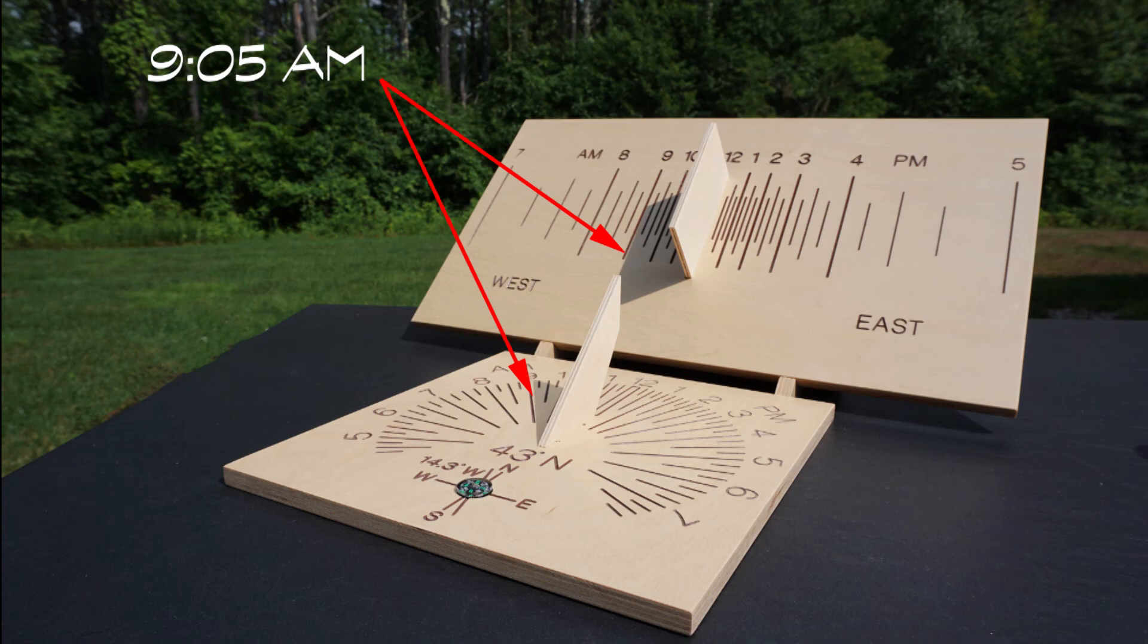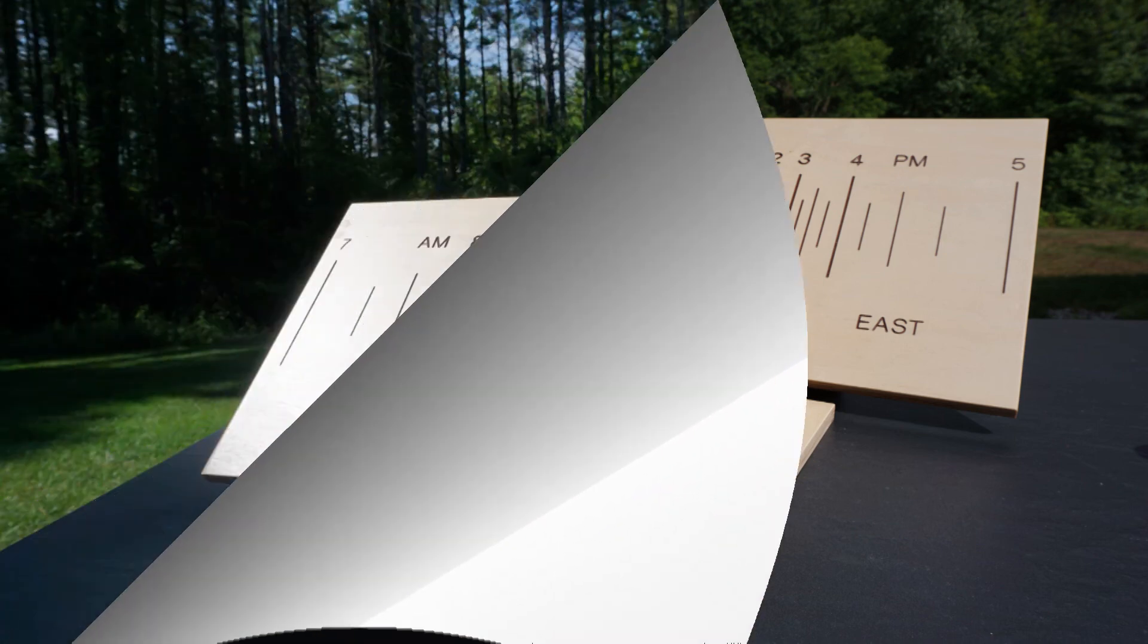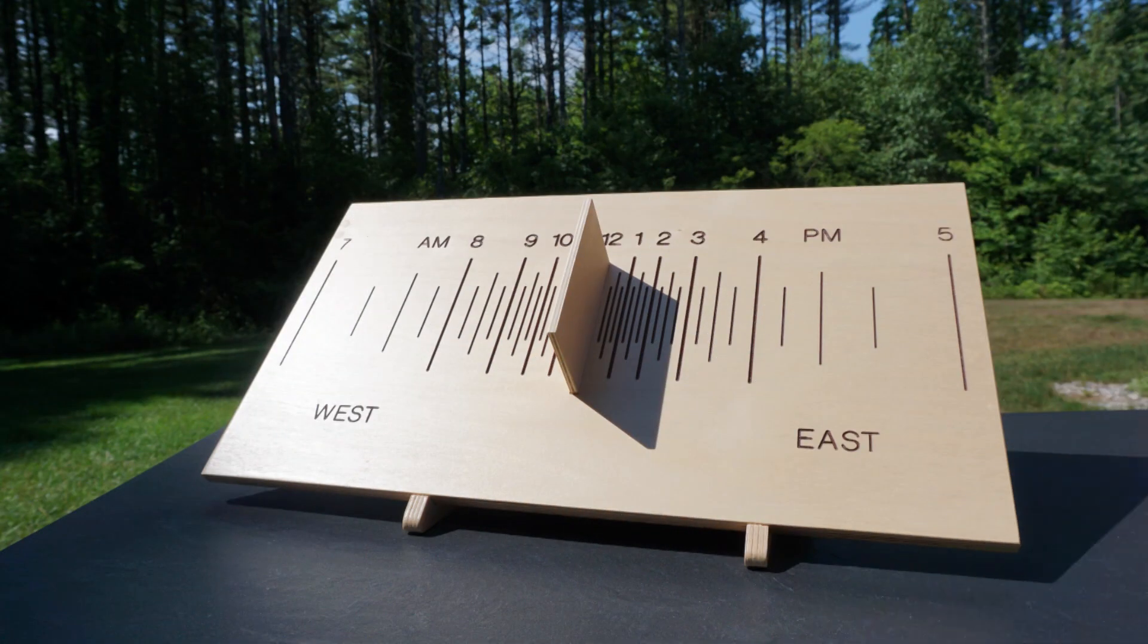The shadows cast by the left or western style of both gnomons touch 9:05 a.m. The polar dial is now aligned for accurate readings of solar time at this location. Additional corrections would be needed to correlate solar time with clock time. That's explained in other video segments.